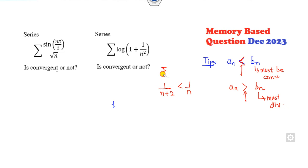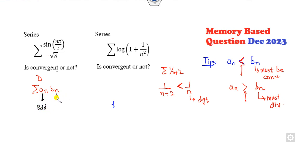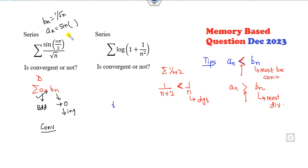How can you solve this? Remember: if you have a product of two series, and you prove one series is bounded and the other approaches zero and is decreasing, then it is convergent (Dirichlet's test). Clearly, if aₙ = sin(n), it is bounded. Take bₙ = 1/√n — it approaches zero and is decreasing. So the series Σ sin(n)/√n is convergent.